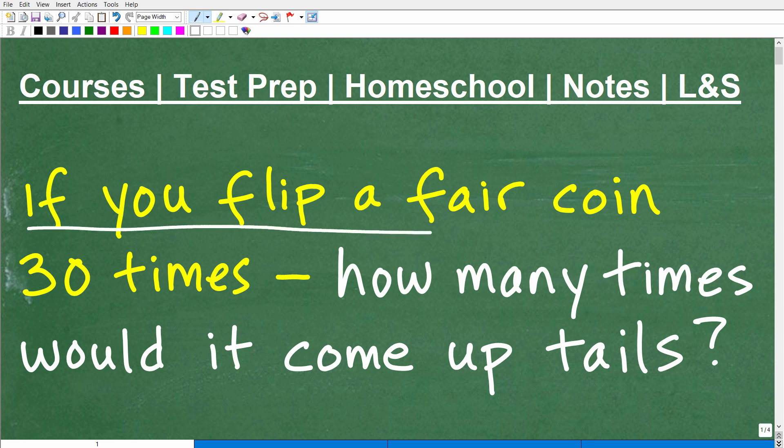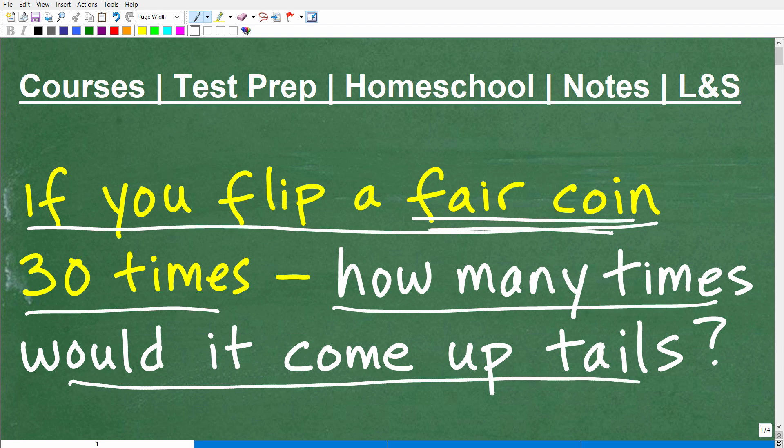Let me read you the problem. It says, if you flip a fair coin, and what does a fair coin mean? It means it's not a trick coin, it's perfectly balanced. So basically a nice perfect coin that has heads and tails on it. So if you flip a fair coin 30 times, how many times would it come up tails?